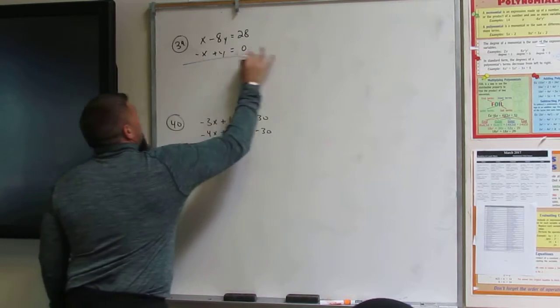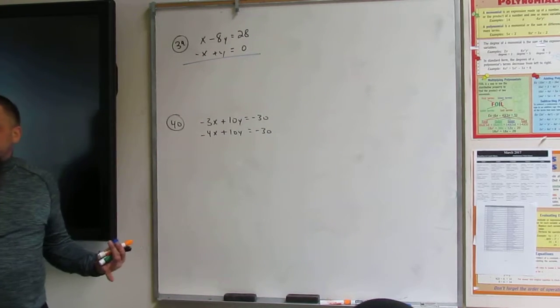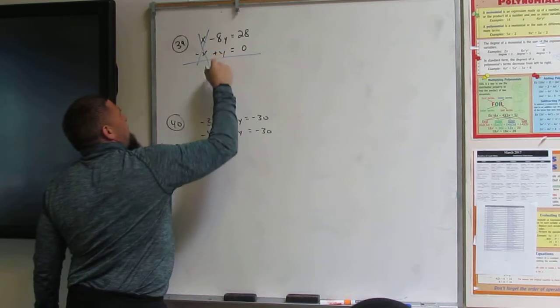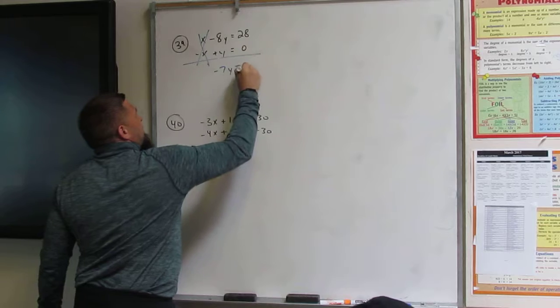All right. So all I've got to do to this one is add them up, right? They're already opposites. The x is cancelled. So I get negative 8 plus 1 is negative 7y equals 28.